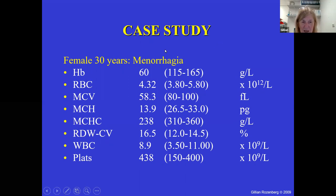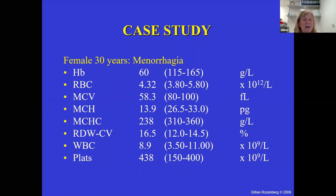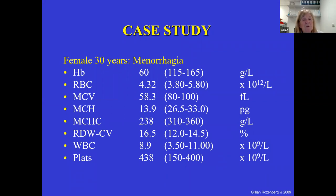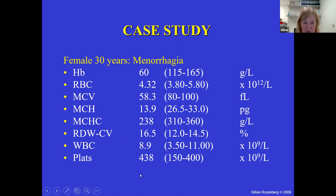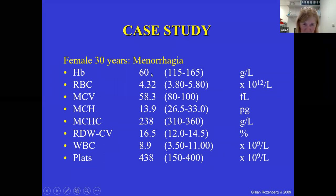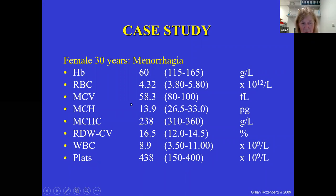Always keep in mind when looking at a blood film: look at the age and sex of the patient. If there are no clinical notes, I put a code in my report saying 'no clinical notes provided' — it might make them think about including notes in future, because they're very important. This is a female, 30 years of age. Looking at the parameters from the analyzer: I don't put too much emphasis on hemoglobin, but I put a lot of emphasis on the mean cell volume and mean cell hemoglobin.